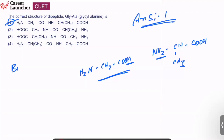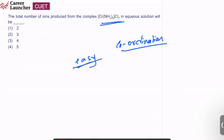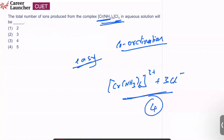Question number 34: total number of ions produced from complex [Cr(NH3)6]Cl3 in aqueous solution. The coordination sphere [Cr(NH3)6]³⁺ does not split; only the 3 Cl⁻ ions dissociate. So we get [Cr(NH3)6]³⁺ and 3 Cl⁻, giving 4 ions total. Answer is option 3. Very easy, basic question from coordination compounds.